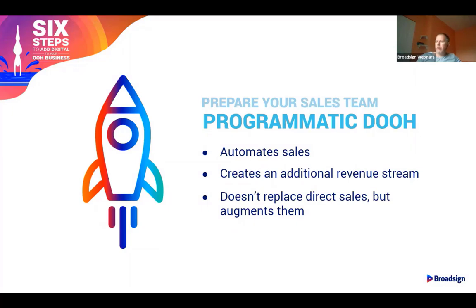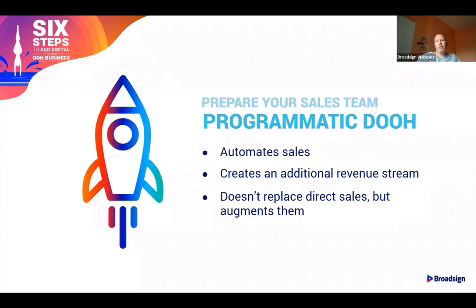One item worth mentioning is programmatic, which came to digital out-of-home four or five years ago. With the ability to push content to your screens over a network and collect and analyze audience data, programmatic doesn't replace the direct sales model and should not be considered a magic bullet. However, it does offer other revenue opportunities for your network. If you're new to the space, I would recommend focusing on the deployment first, but keep in mind that programmatic works best with granular audience information and standardized content options. By making your network programmatic-ready initially, you're setting yourself up better for success later down the road.